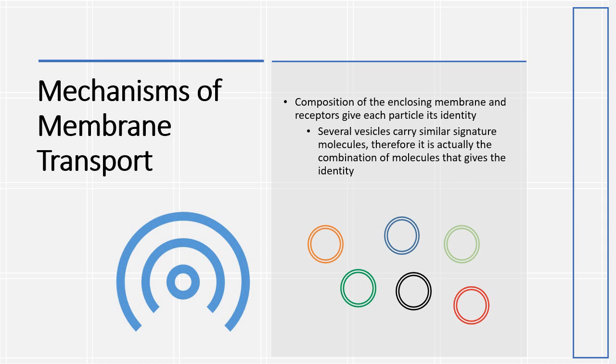So, all these vesicles may carry blue, red, green, yellow and grey membrane proteins, but their number and arrangement is unique in each vesicle type, thus giving them their unique identity.